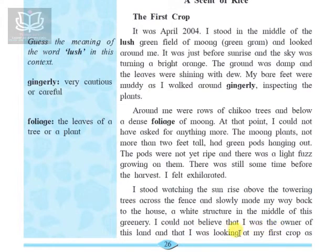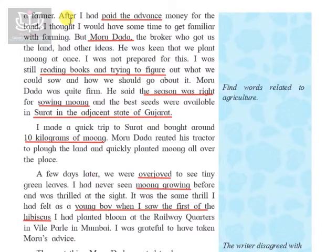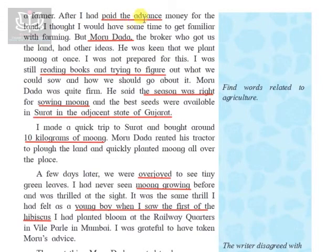In the middle of that land stood his white house, and he couldn't believe he was the owner of this rich land where he could grow many things. He was very happy, looking at his very first crop as a farmer. After paying the advance money for the land, he thought he would have some time to get familiar with farming, since he had just transitioned from being a software engineer to becoming a farmer.